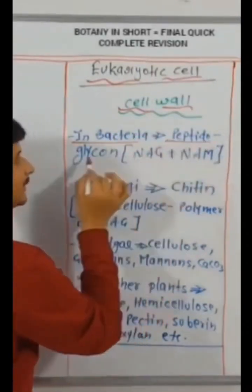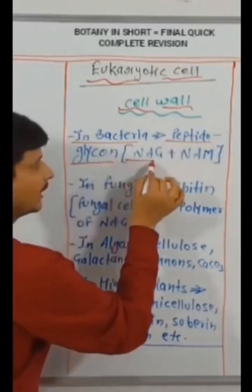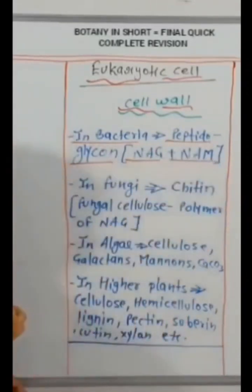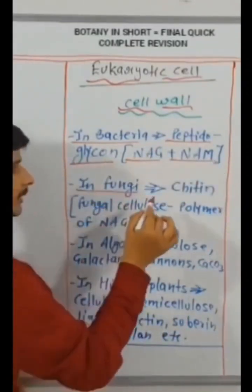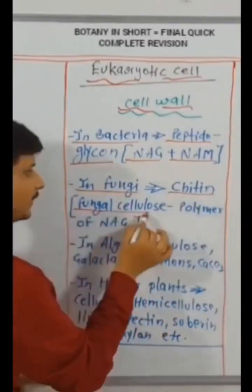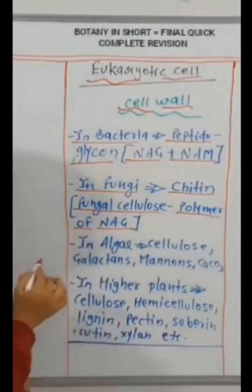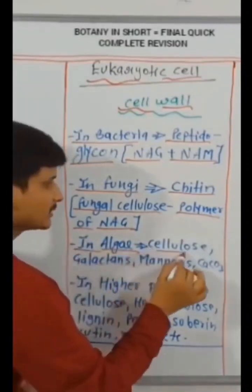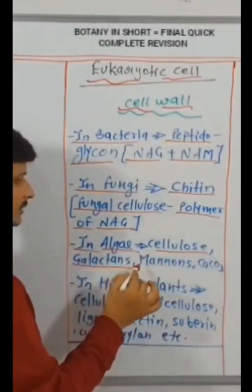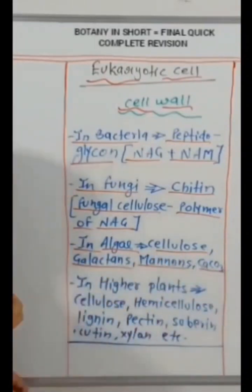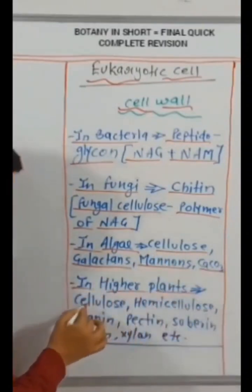Cell wall composition: In bacteria, peptidoglycan, N-A-G plus N-A-M. In fungi, chitin, fungal cellulose, polymer of N-A-G. In algae, cellulose, galactans, manans, calcium carbonate.